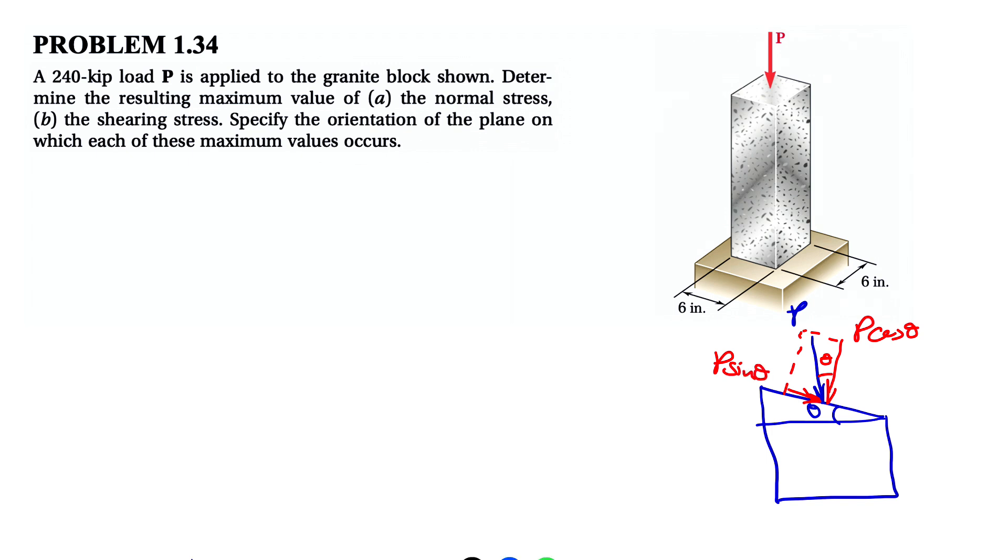If we want to find the general formula for finding these, for normal stress we basically have P cosine of theta over the surface that we have, let's call it A prime. And the other surface that we have is the surface perpendicular to P, which we can call A, which is this surface here.